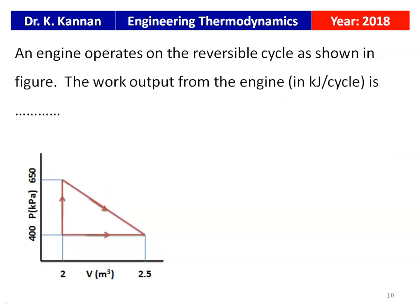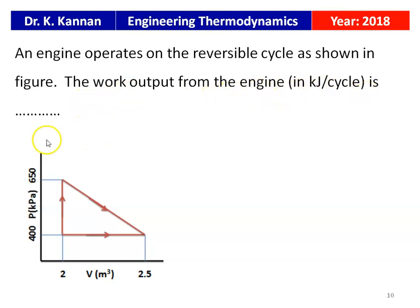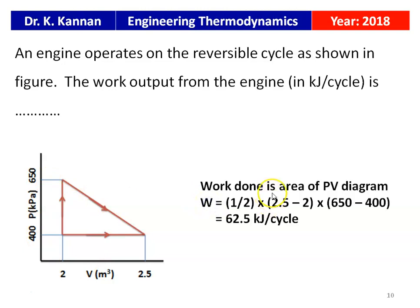From the 2018 question paper: An engine operates on a reversible cycle as shown in the figure. The work output from the engine in kJ per cycle is required. In the PV diagram, volume is on the x-axis (m³) and pressure on the y-axis (kPa). The highest pressure is 650 kPa, lowest is 400 kPa; minimum volume is 2 m³ and maximum is 2.5 m³. Work done equals the area of the PV diagram: W = ½ × B × H = ½ × (2.5 − 2) × (650 − 400) = 62.5 kJ per cycle.